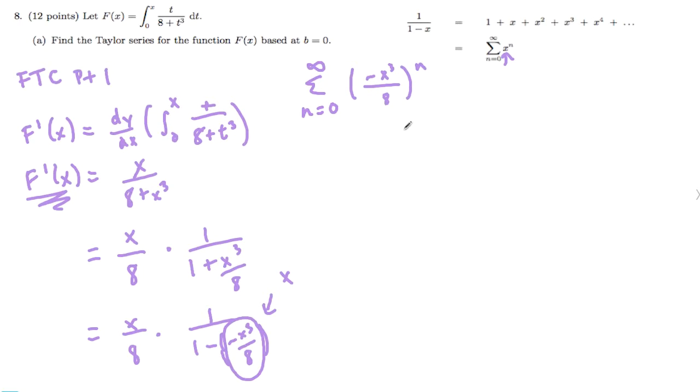And we can factor stuff out and make it a little prettier. So n equals 0 to infinity, negative 1 to the n. The way you factor stuff out here is you know that you can imagine that there's a negative 1 out front here. So negative 1 times x to the third.